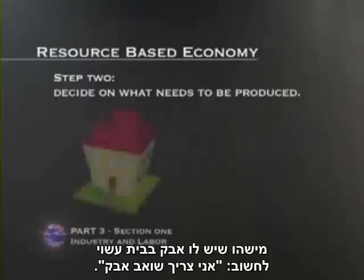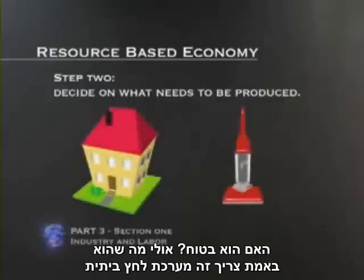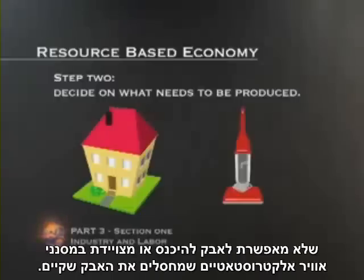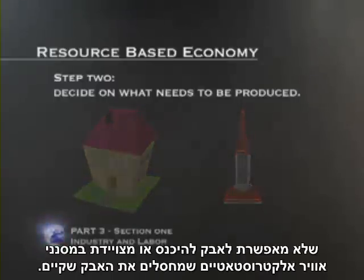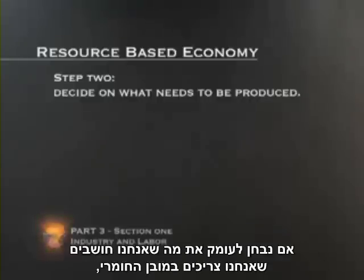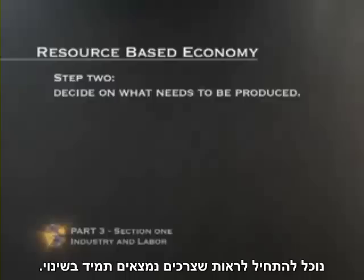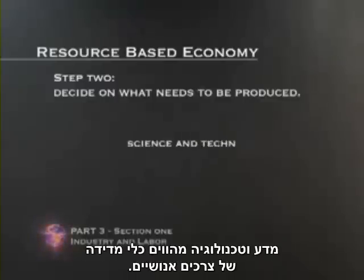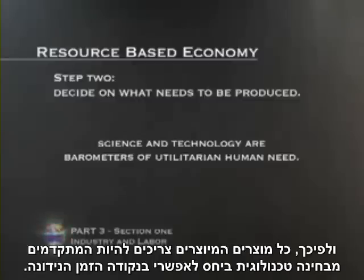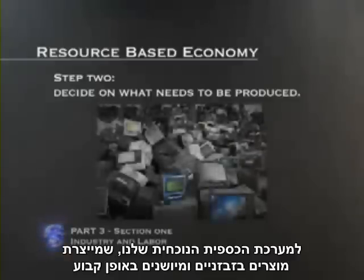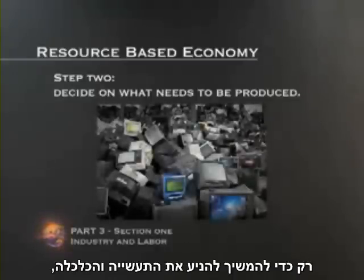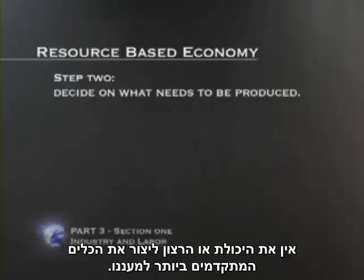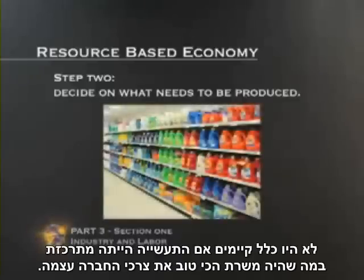Someone who has dust in his or her home might think, I need a vacuum cleaner. Are they sure? Perhaps what they actually need is a household pressure system that does not enable dust to enter, or is equipped with electrostatic air filters that eliminate what dust there is. If we think very critically about what we think we need in a material sense, we can begin to see that needs are always in transition. Science and technology are barometers of utilitarian human need, and therefore all products made should be as advanced as that period of time makes possible. Our current monetary system, which generates wasteful, outdated products constantly just to keep the companies and economy going, does not have the ability or the desire to produce the most advanced tools for our use. This is because the majority of the products produced today would not exist if society focused on what would best serve the needs of society itself.